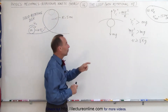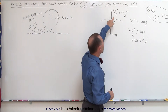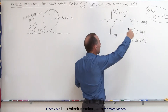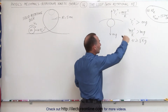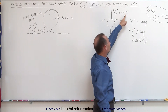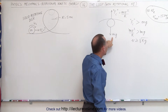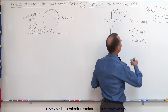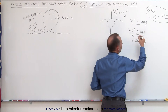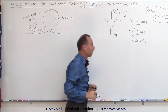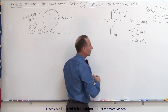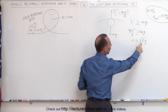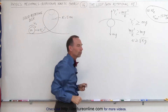When the object gets to the top, the fictitious centrifugal force that seems to drive the object to the outside because of its rotational motion, being equal to mv² over r, must be greater than or equal to mg. If it's equal to mg, it still will not fall down. So we know that at the top, the velocity should be at minimum the square root of the radius times the acceleration due to gravity.